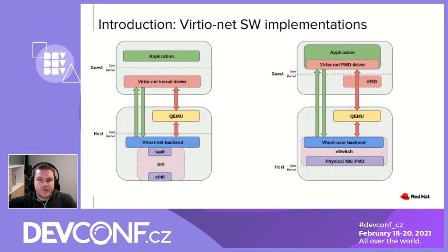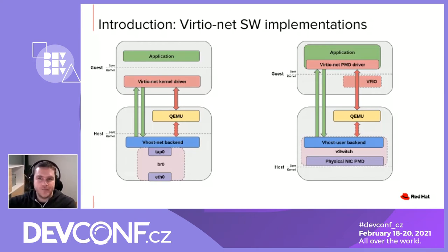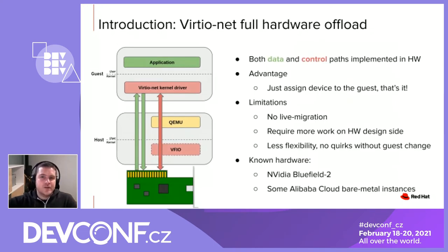Also, even with a full user space solution, the performance will be significantly less than when assigning SR-IOV VFs directly to the guest or to the container. The question now is: how can we improve the Virtio performance while keeping the advantages? The answer is by offloading the Virtio device datapath to the hardware. There are two ways to offload Virtio Net to the hardware. The first one is full Virtio offload, meaning both the data and the control path are implemented in hardware — for example, in the SR-IOV VF.